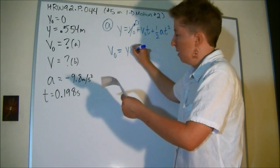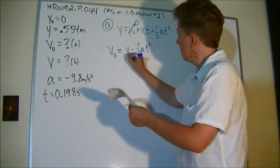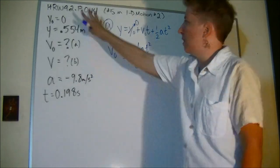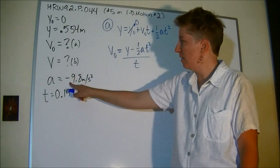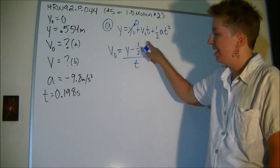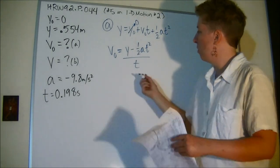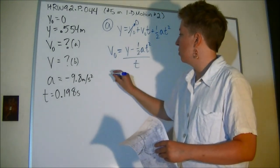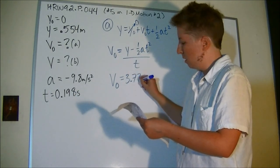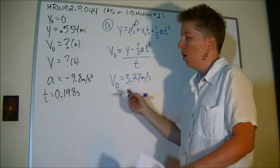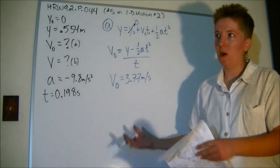I get V naught equals y minus one-half a t squared all over t. If you plug these numbers in there, keep in mind that a is a negative number, so you're going to end up with minus a negative, so this will become an addition. If I do all that, I get an initial velocity of 3.77 meters per second, which is what WebAssign said was the answer.